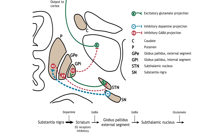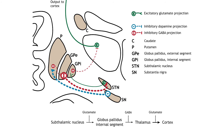The indirect pathway can be inhibited by dopamine release from the substantia nigra. The neurons in the striatum involved in the indirect pathway express the D2 metabotropic dopamine receptor, and the activation of this receptor is inhibitory. If the indirect pathway is inhibited by dopamine projections from the substantia nigra, the inhibitory striatal neurons are inhibited. This leads to disinhibition of the external segment of the globus pallidus neurons, resulting in inhibition of the excitatory neurons in the subthalamic nucleus. The decreased excitatory output to the internal segment of the globus pallidus decreases inhibition of the thalamus, leading to increased thalamic output to the cortex.